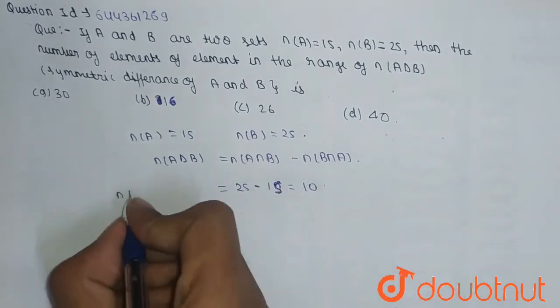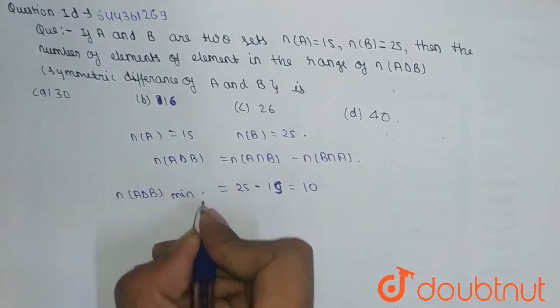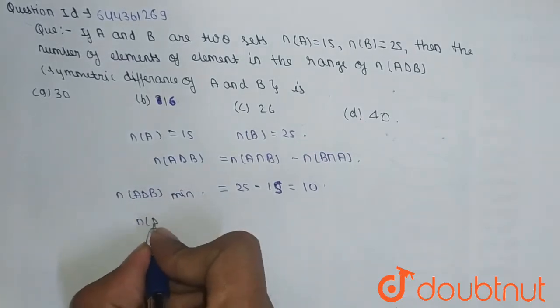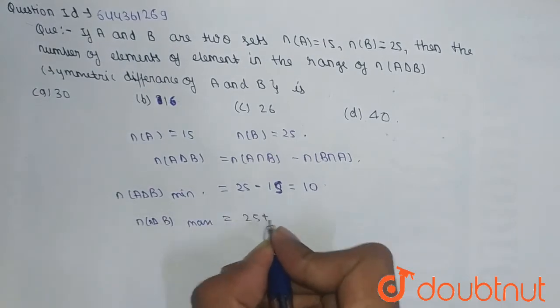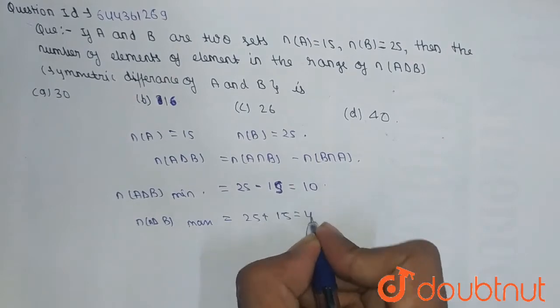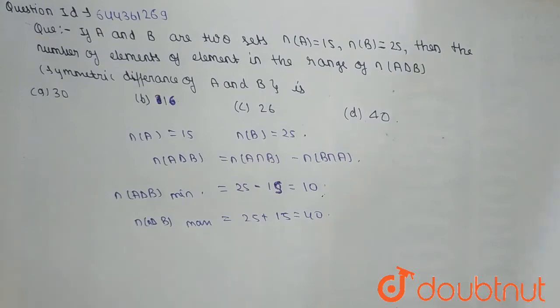So n(A Δ B) minimum is equal to 10. Now n(A Δ B) maximum is equal to 25 plus 15, which is equal to 40. So the value lies between 10 to 40.